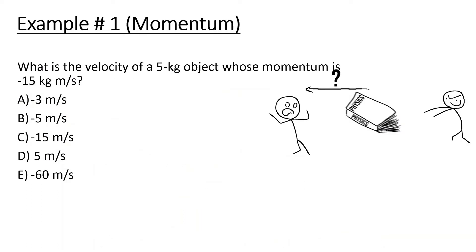What is the velocity of a 5 kilogram object whose momentum is negative 15 kilograms times meters per second? This should be a relatively simple problem. Momentum equals mass times velocity. Momentum is negative 15, mass is 5, so velocity equals negative 3 meters per second.